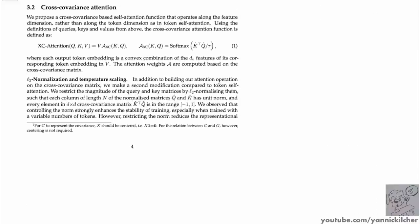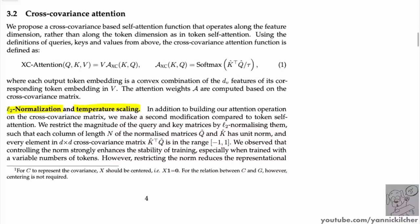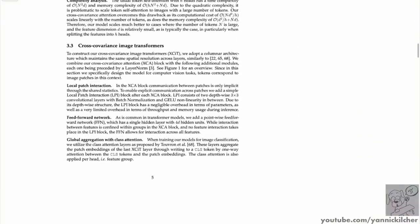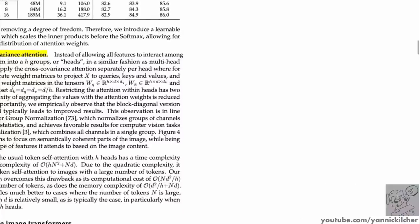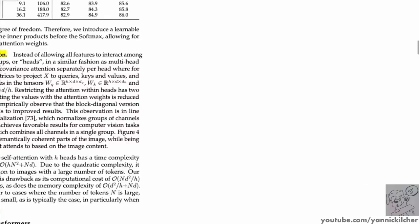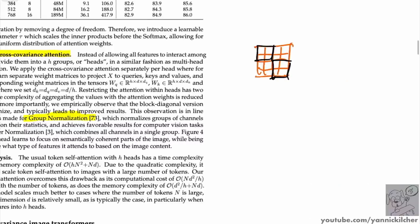On the engineering side: L2 normalization is critical — without it, the model breaks down entirely. Temperature scaling via a learned temperature parameter also matters. They also use block-diagonal cross-covariance attention — only groups of channels attend to each other, analogous to group normalization — rather than all channels attending to all others.